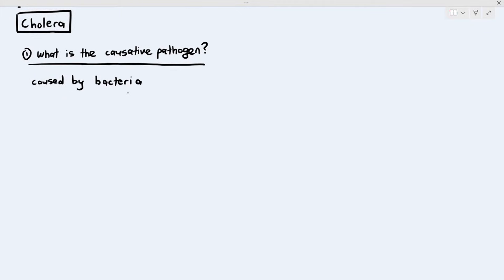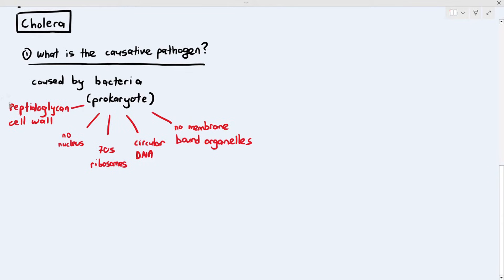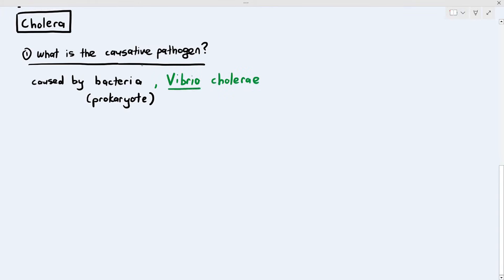The first thing we have to know is what is the causative pathogen - the type of pathogen and the name of the pathogen that causes this disease. Cholera is caused by a type of bacteria which falls under the group of prokaryotes. This is a revision for chapter one. Prokaryotes are organisms that are unicellular, don't have a nucleus, have 70S ribosomes, circular naked DNA, no membrane-bound organelles such as ER, Golgi apparatus, mitochondria, and they also have a peptidoglycan cell wall.